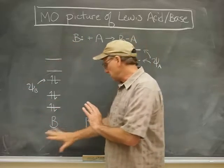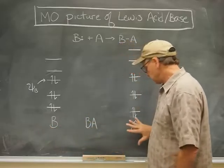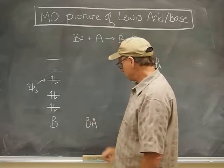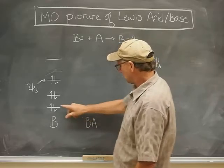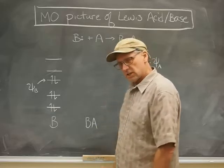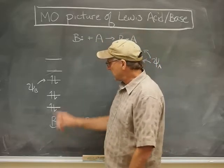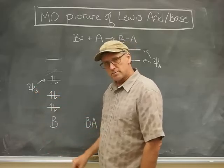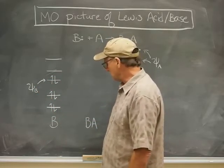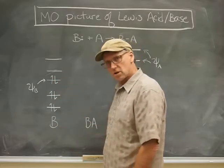I've laid out the start of an MO diagram here. Here's B on the left, here's A on the right, and there's going to be the adduct BA in the middle. I've put a few molecular orbitals — one of those is quite important for forming the dative bond, and I'm labeling it as PsiB. Usually it's the HOMO, the highest occupied molecular orbital of the base, though sometimes it might be one below.